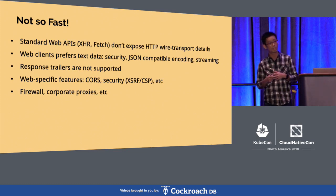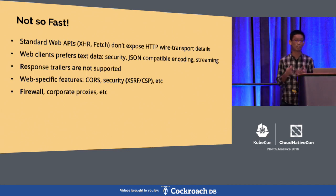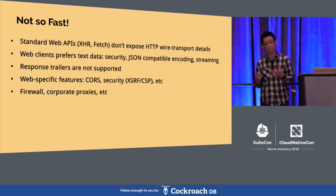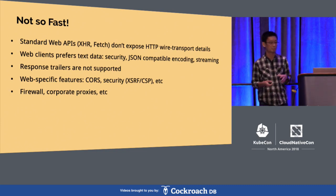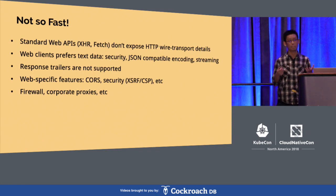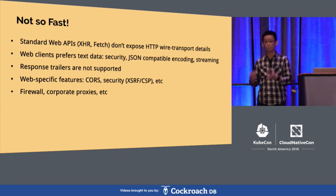The gRPC protocol relies on response trailers to carry metadata about your RPC back to the client, and that is not exposed to us in the standard browser APIs. For browser clients, we also have to take care of web-specific features like CORS and security. And in many cases where you deploy your web application, you may be behind firewalls, so HTTP/2 may not be available.